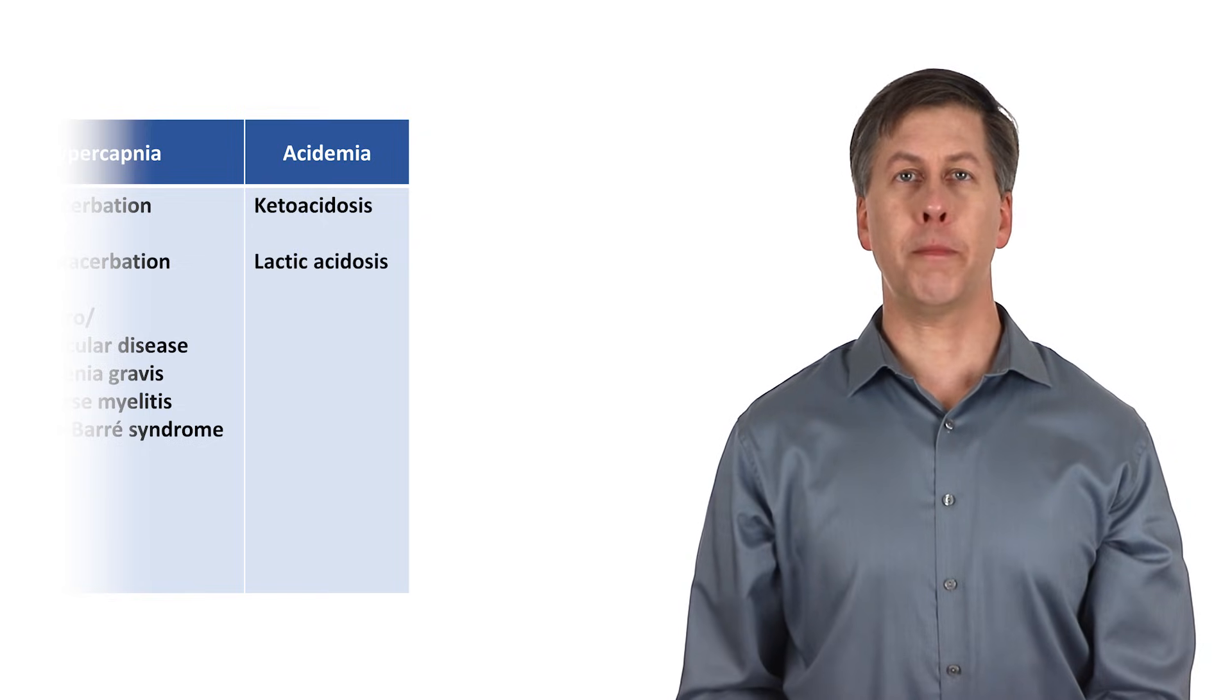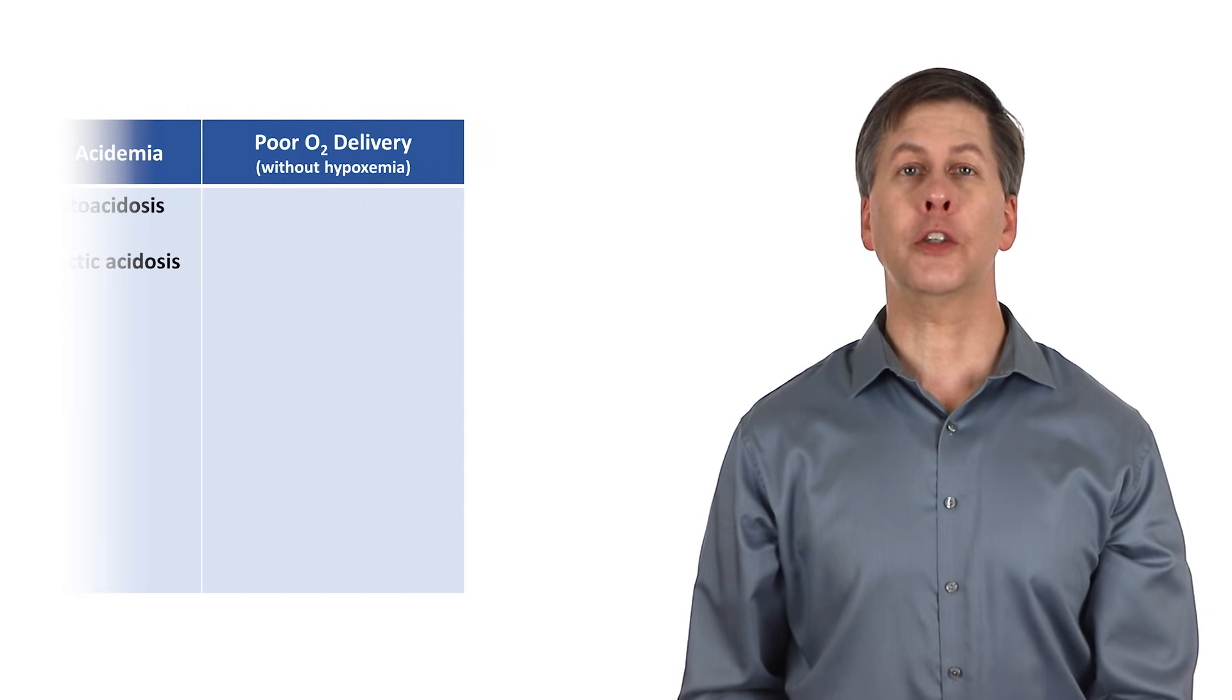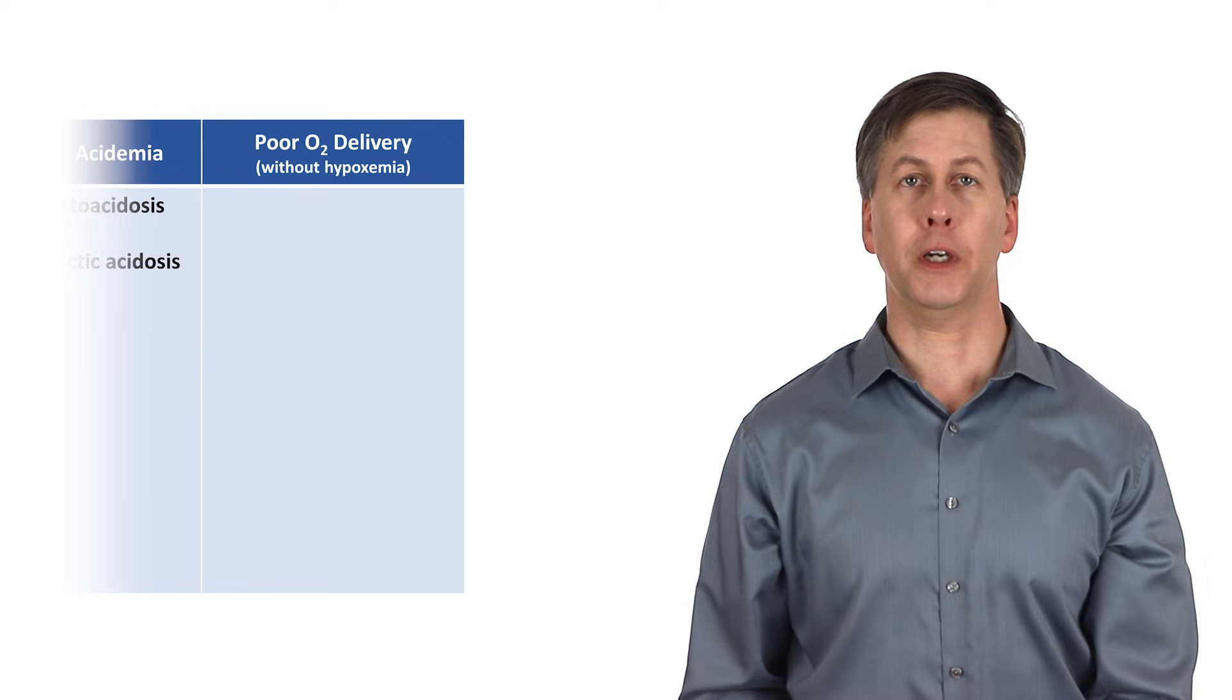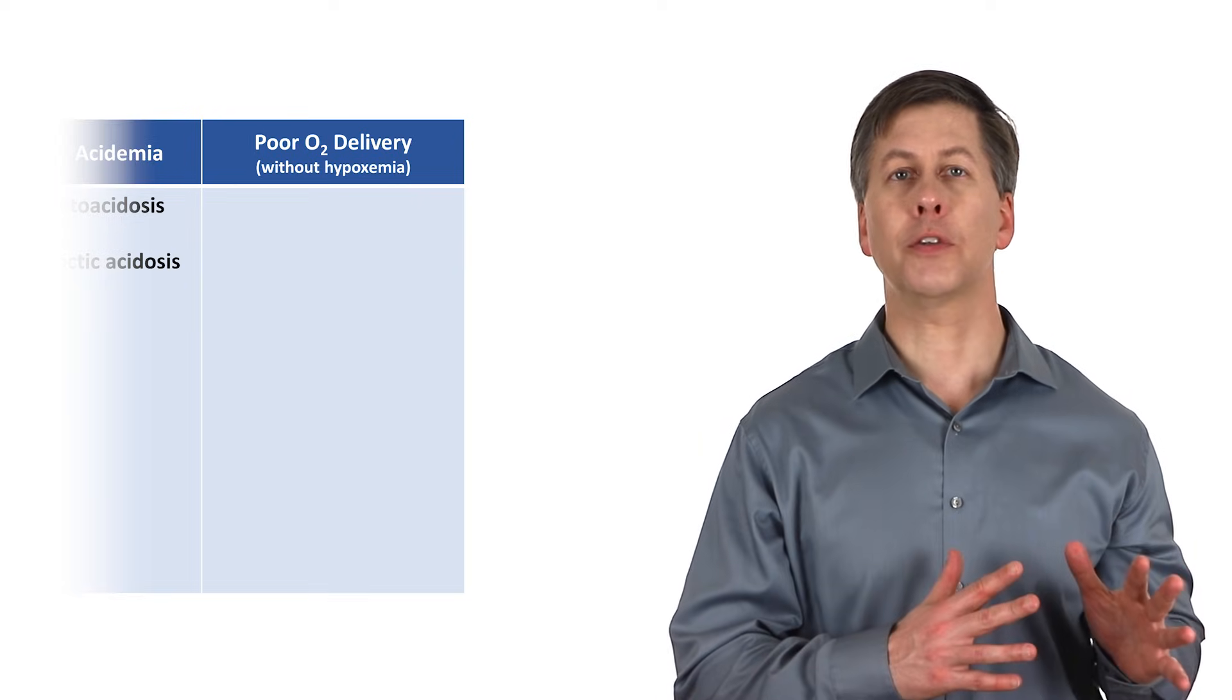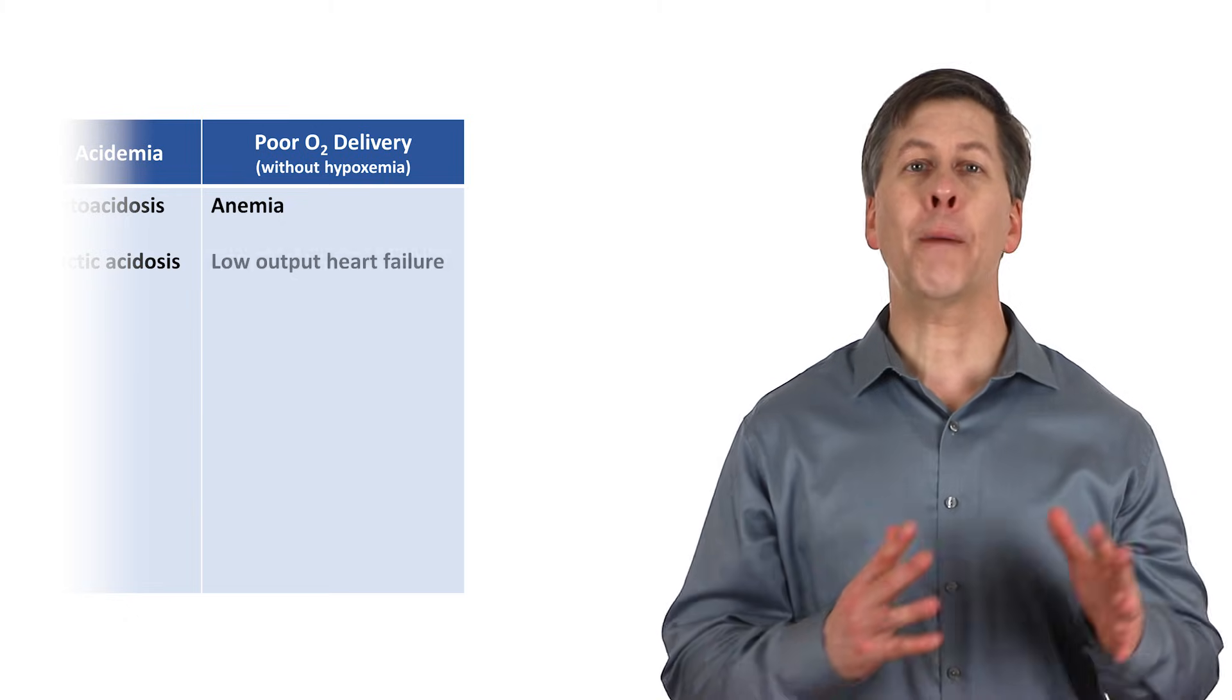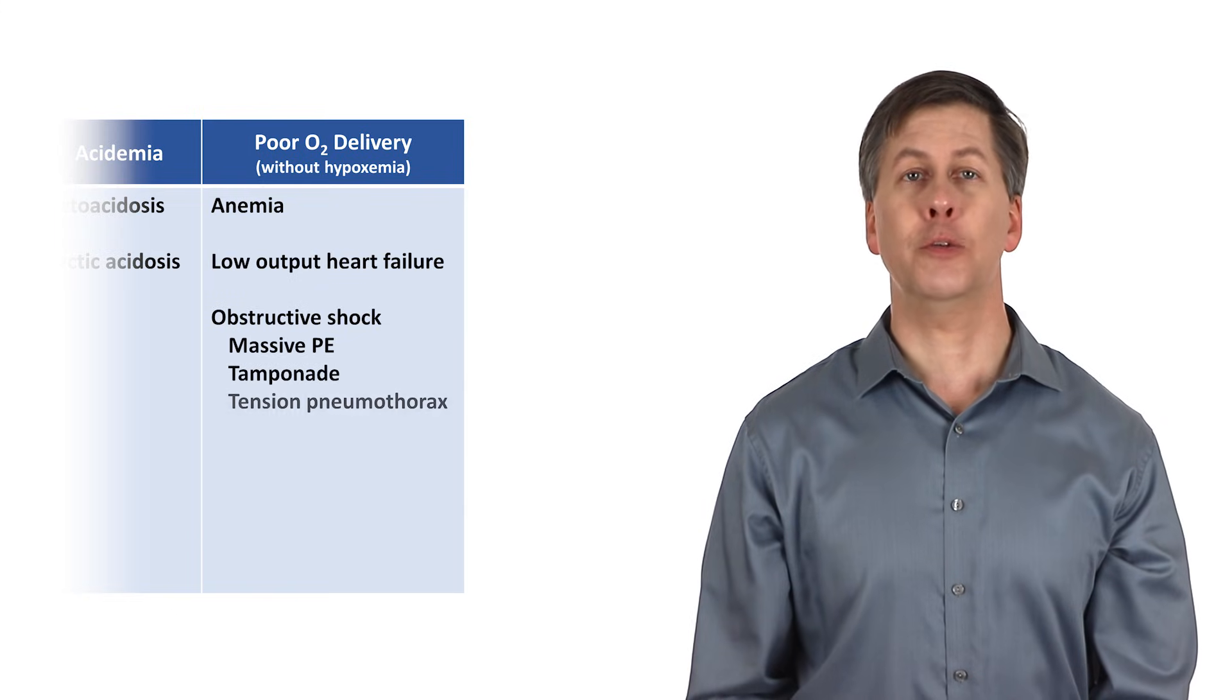Beyond those three main peripheral chemoreceptor mediated triggers for dyspnea, there are a few more to consider. Poor oxygen delivery to peripheral tissues, as a consequence of factors other than hypoxemia, also can lead to dyspnea. If you recall that oxygen delivery is proportional to both the hemoglobin concentration and the cardiac output, you will quickly deduce that this category includes anemia, low output heart failure, and obstructive shock, such as that seen from massive PEs, tamponade, and tension pneumothorax.